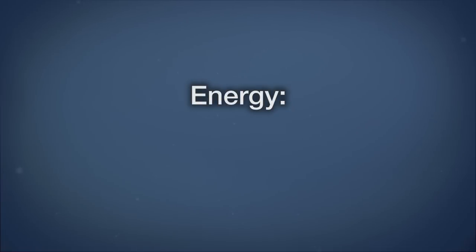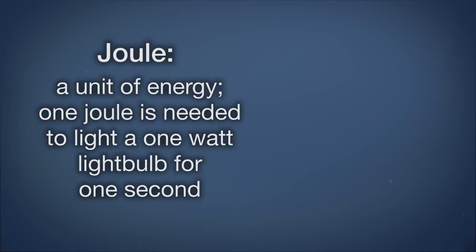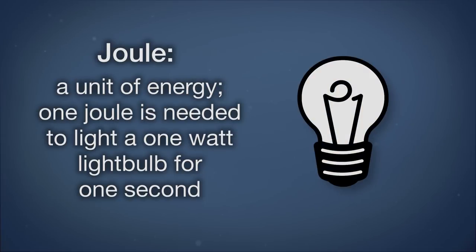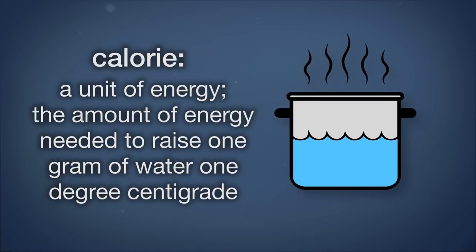Energy is the ability to do work or transfer heat. Understanding energy is a real challenge and a key to understanding environmental science. Energy is measured in joules, which is the amount of energy a one-watt light bulb uses in one second. Another unit of energy is the calorie, which is the amount of energy needed to raise one gram of water one degree centigrade.